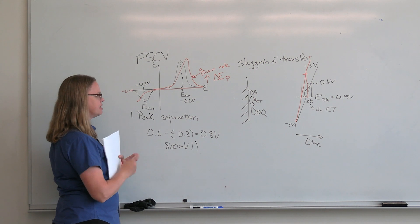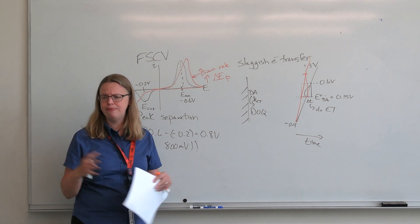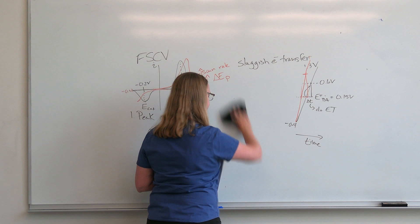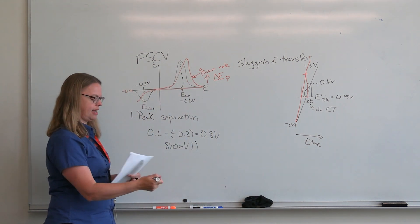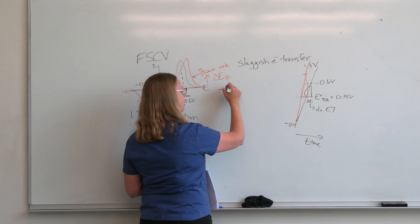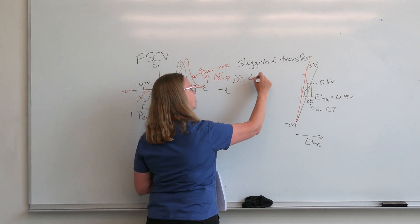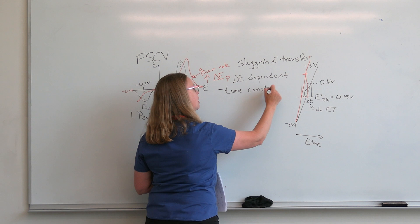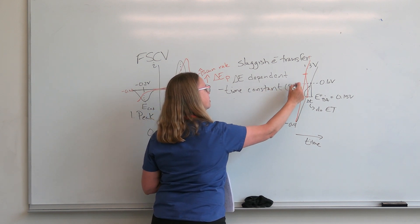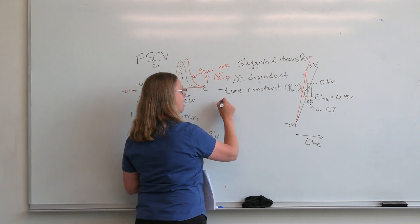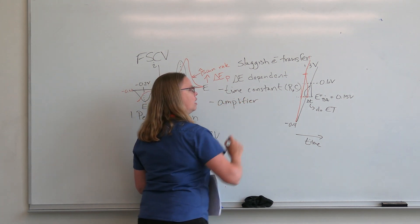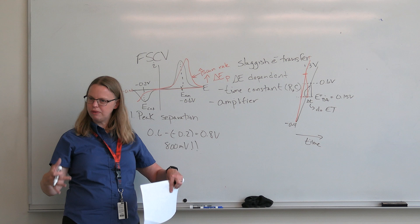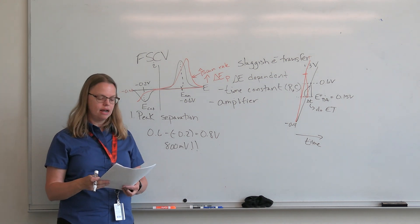When we wrote a paper about this, the reviewers noted there are many more causes of peak shifting. So all of these delta E peak values are dependent on a lot of things. The time constant of your reactions — that's the R and C — is one factor. It's also dependent on your amplifier: filtering settings or the bandwidth of your amplifier can come into play, and if it's not properly designed, that could cause peak shifting.